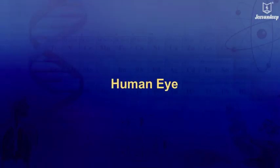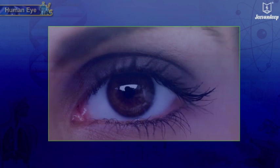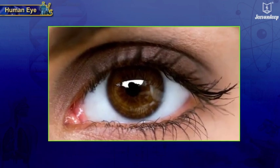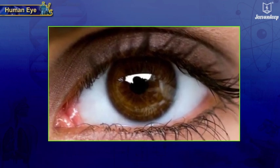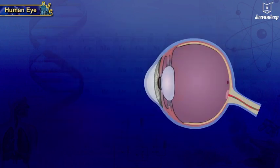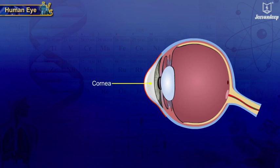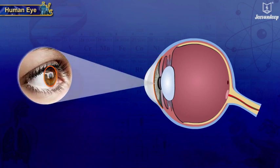The human eye is a complicated structure. The thin transparent membrane in front of the eye is known as the cornea. Light enters the eye through the cornea. Behind the cornea is the colored part of the eye.